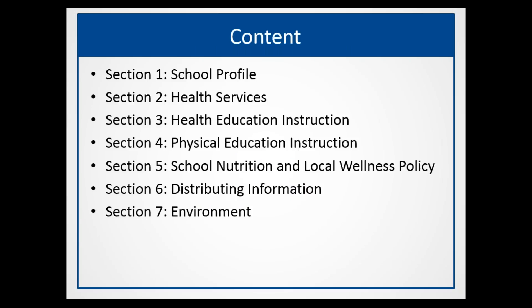The profile is divided into seven sections and it's an online form that must be completed by each school. For example, if your LEA includes five campuses, each campus must complete the profile. We recommend that one person at each school be responsible for disseminating the questions to other staff — that could be a health teacher, a nurse, or a food services director — and then that person collects all the information and submits the form online.